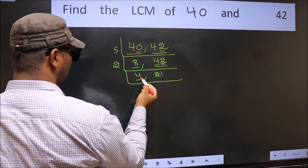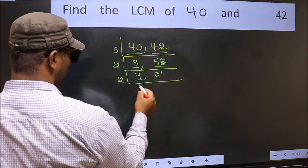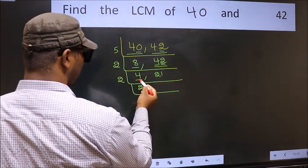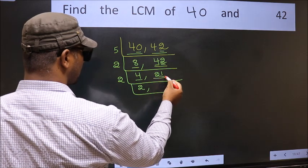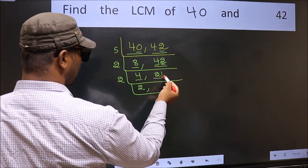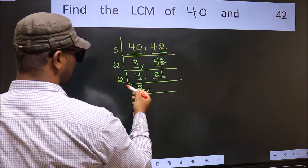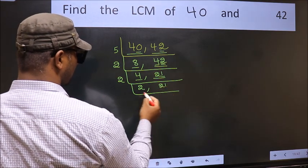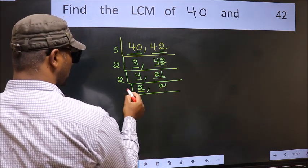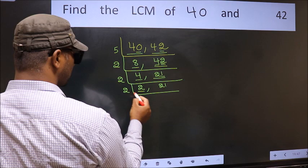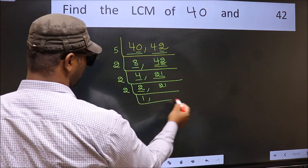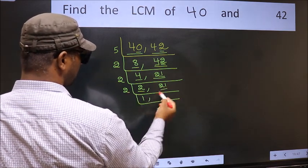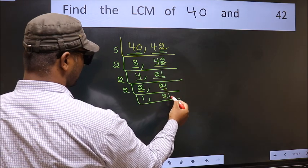Now here we have 4. 4 is 2 times 2. The other number, 21, last digit 1, not even, so this is not divisible by 2. So we write it down as it is. Now here we have 2. 2 is a prime number, so 2 times 1 is 2. The other number, 21, is not divisible by 2, so we write it down as it is.